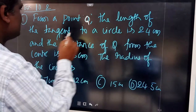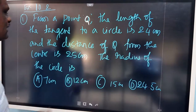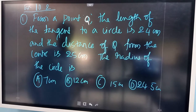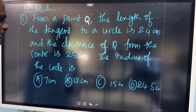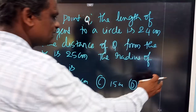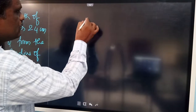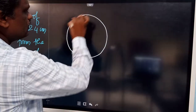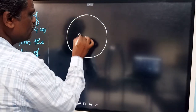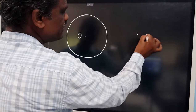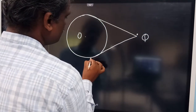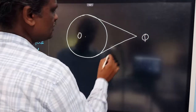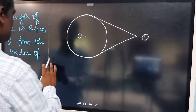From a point Q, the length of the tangent to a circle is 24 centimeters and the distance of Q from the center is 25 centimeters. Find the radius of this circle. So let us draw a diagram. Take a circle with center O and an external point Q, and draw two tangents from Q.